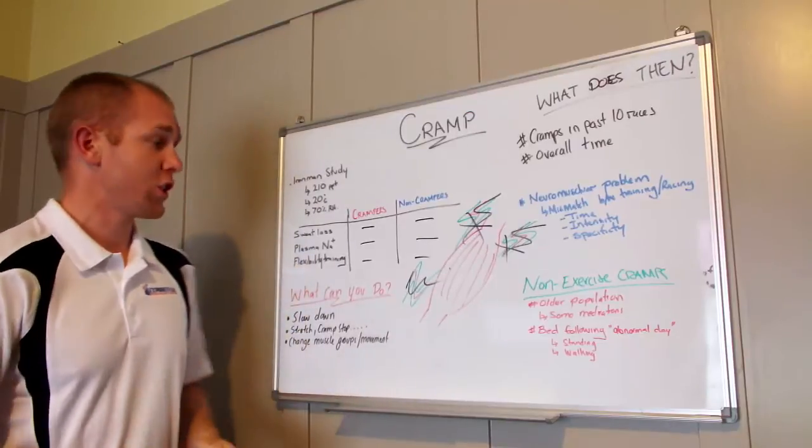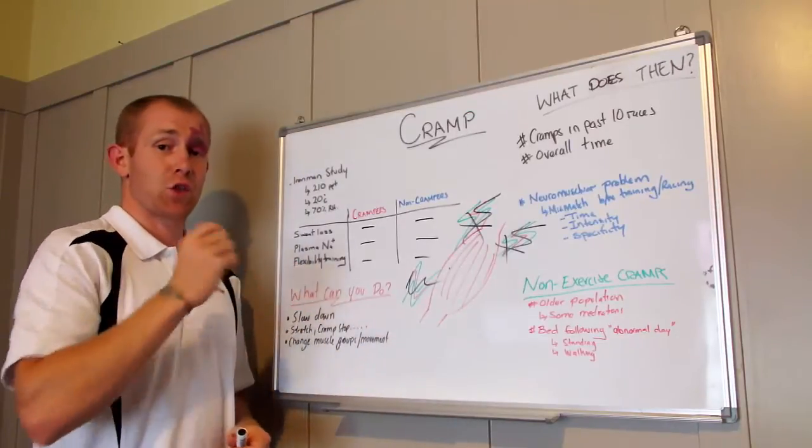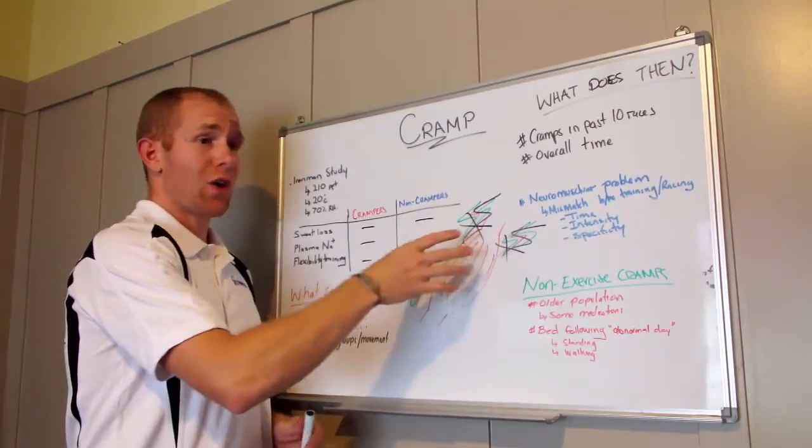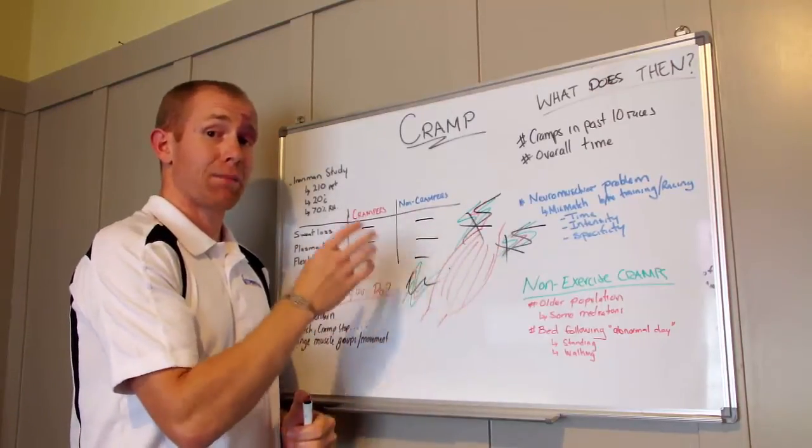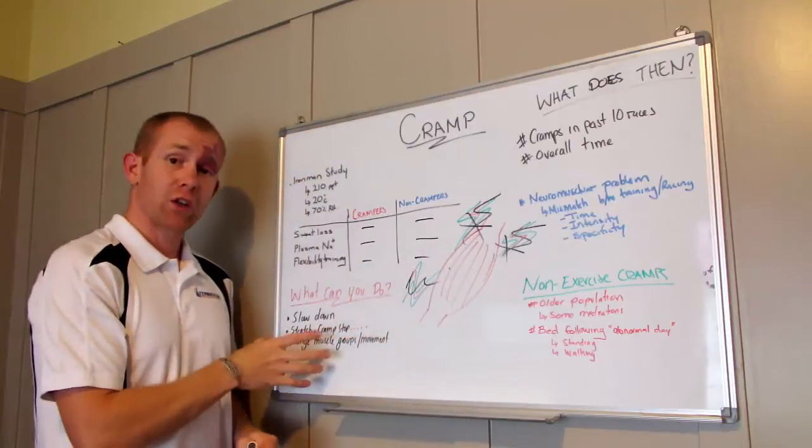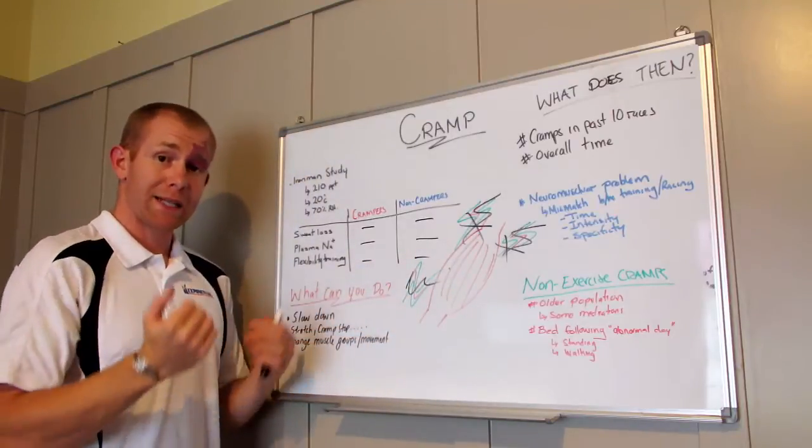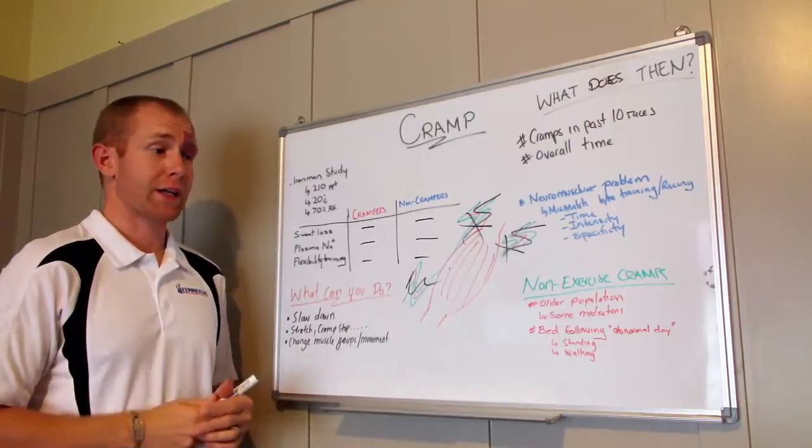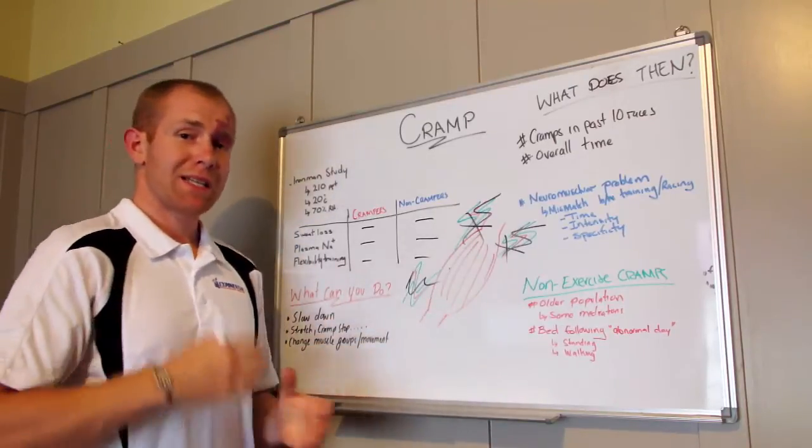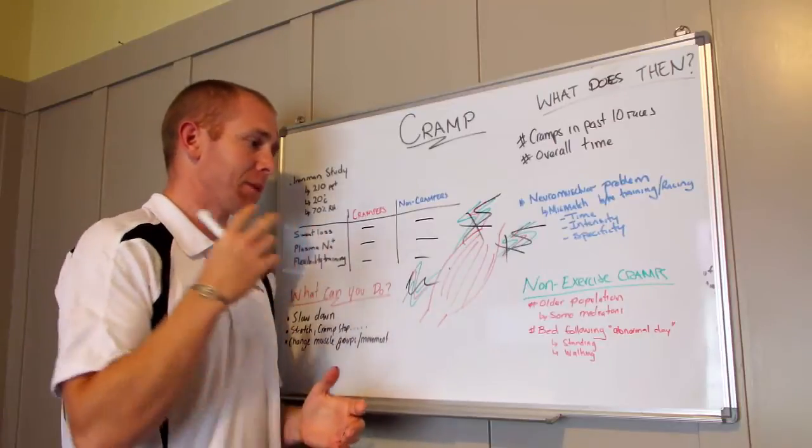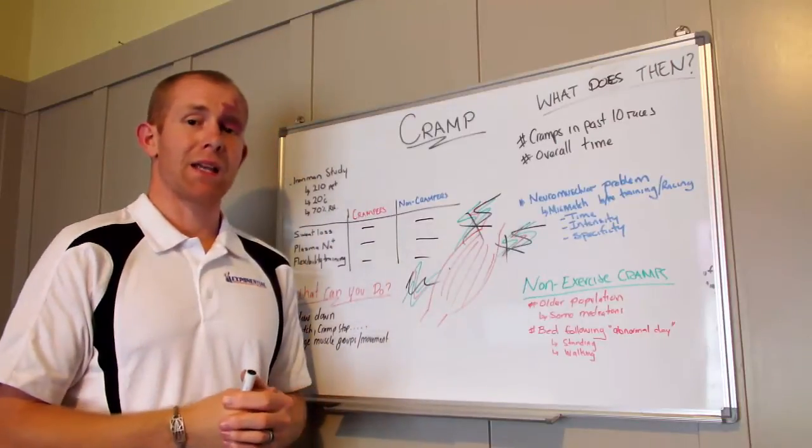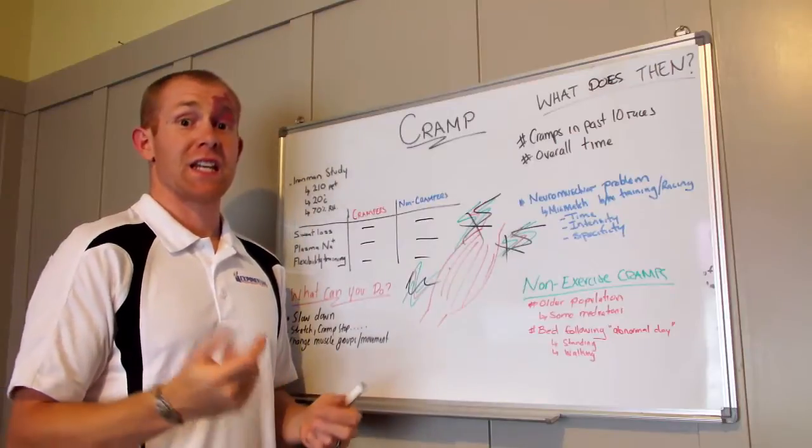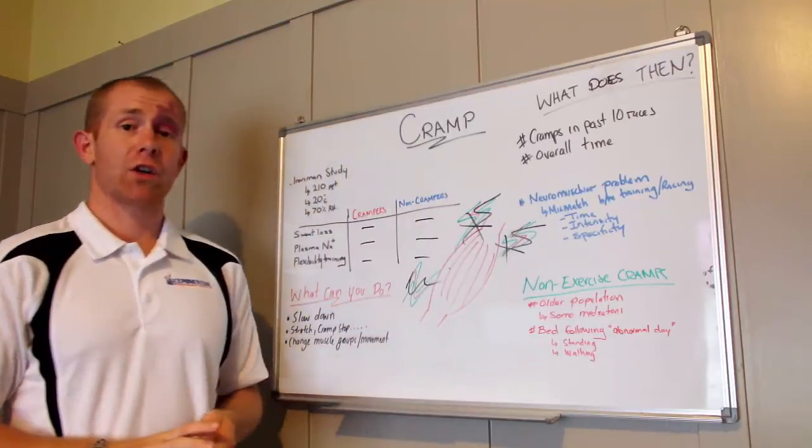Key take-home messages: it doesn't seem to be sweat loss or electrolyte imbalances that cause cramp. Cramp looks like it's mainly a neuromuscular problem. If you get cramp in a race, you probably need to button things back a little bit before it gets too out of control. And non-exercise cramps seem to be caused by the same mechanism as exercise cramps, a neuromuscular fatigue.